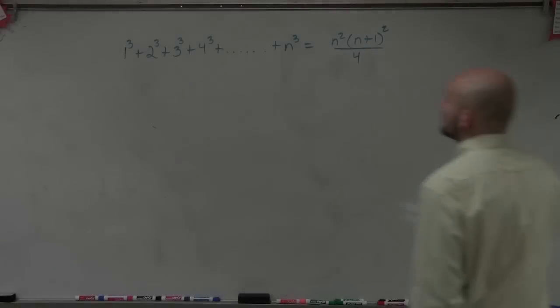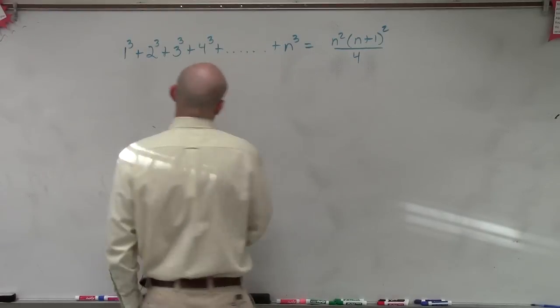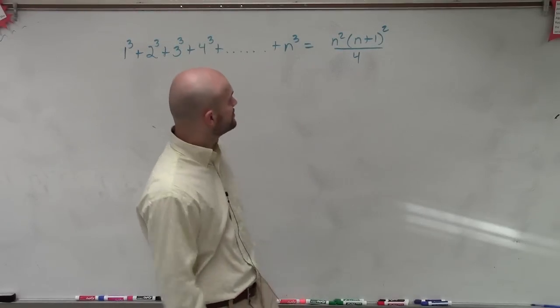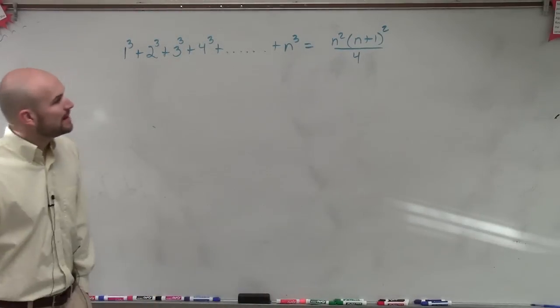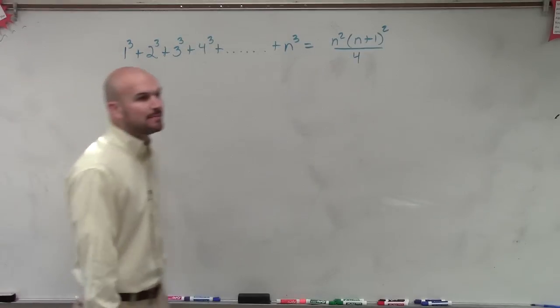On this one, we have 1³ + 2³ + 3³ + 4³ + ... + n³ = n²(n+1)²/4.